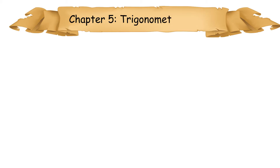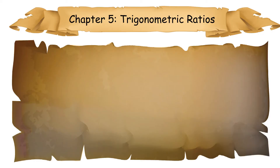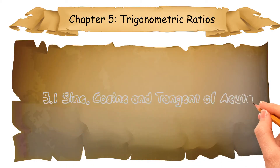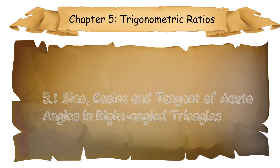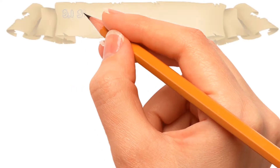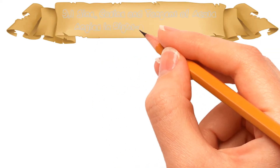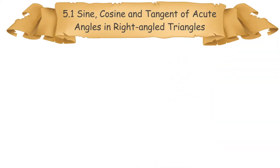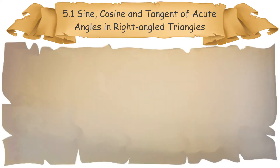Hi, I'm Teacher Daisy. Now, let's learn Form 3 Chapter 5 Trigonometric Ratios. In this chapter, you will learn 5.1: sine, cosine and tangent of acute angles in right-angled triangles.